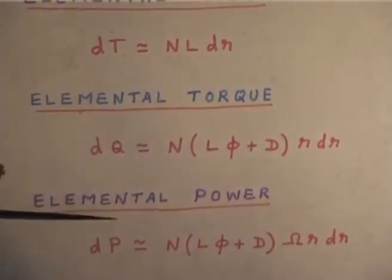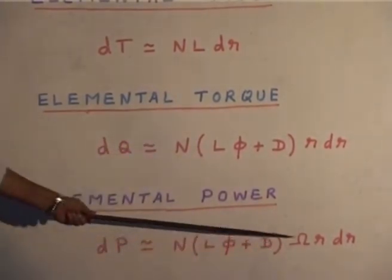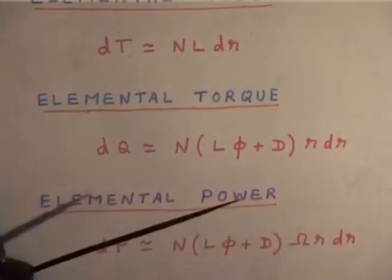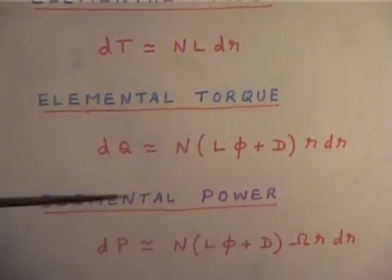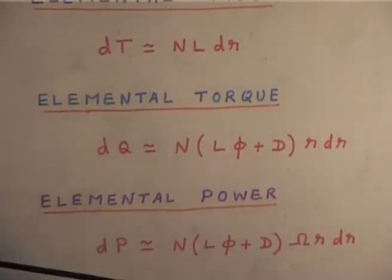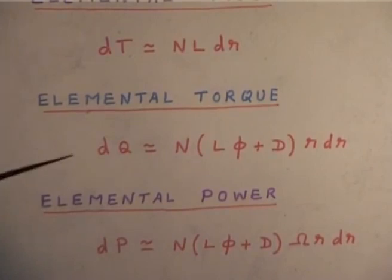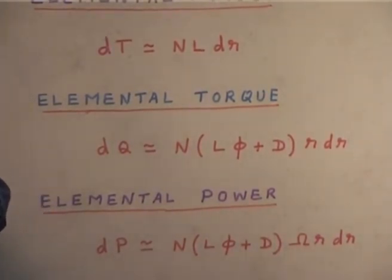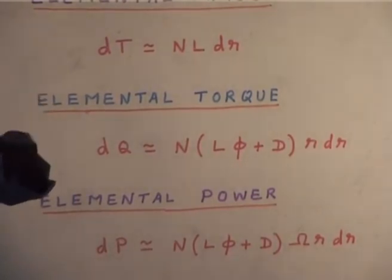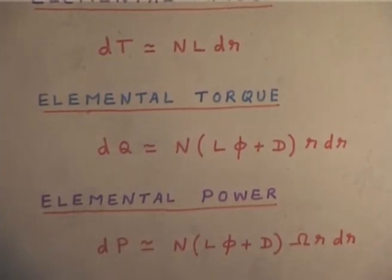When you look at the power expression, it is exactly the same — the only difference is there is an omega, because power is torque times omega. Again, this has the same two components. So the power required has two components: one is the induced power, and another is the profile power or profile drag power.